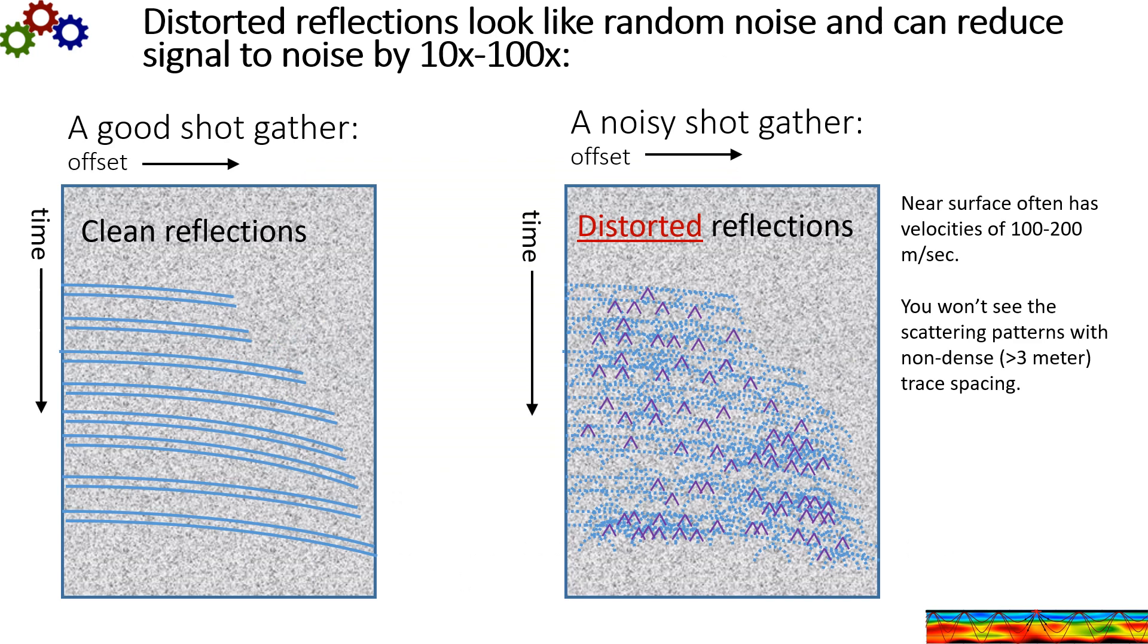And this is the effect of the scattering on upcoming wave fields. The scattering distorts reflections and it makes them look like random noise and can reduce signal to noise by 10x to 100x. So without surface scattering you might have clean reflections like this. With surface scattering you have distorted reflections where you see a lot of scattering of the clean reflections. You see these inverted V's and hyperbolas. Now the near surface often has very slow velocities. So you generally won't see these inverted V's or hyperbolas. You won't see these scattering patterns with non-dense trace spacing. Say trace spacing greater than 3 or 5 meters.